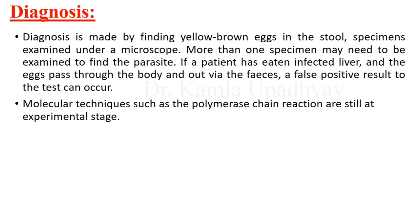Diagnosis is made by finding yellow-brown eggs in the stool; specimens are examined under a microscope and more than one specimen is needed. Note: if a person has eaten infected liver, eggs may pass through the body and appear in stool, giving a positive result even without actual infection. Polymerase chain reaction diagnosis is still at the experimental stage.